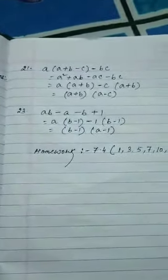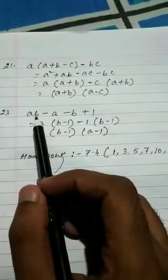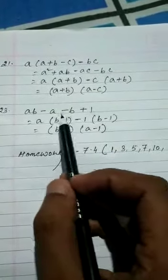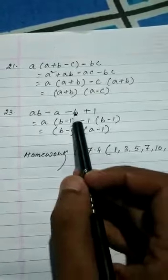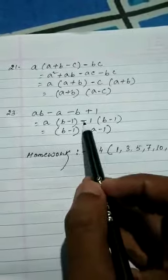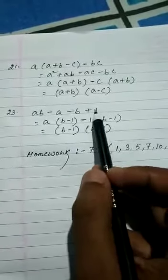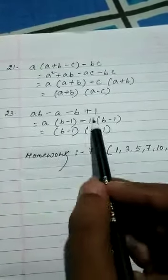Next: AB minus A minus B plus 1. A we can take common: B minus 1. From there minus 1 we can take common, so B is positive now. We have to make plus there, so minus minus gives plus 1. B minus 1 is common, giving us A minus 1.